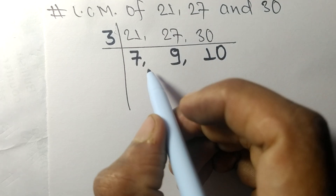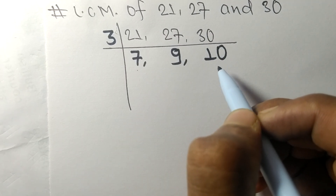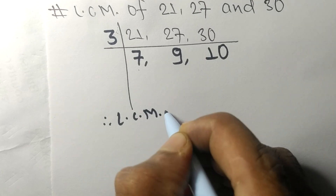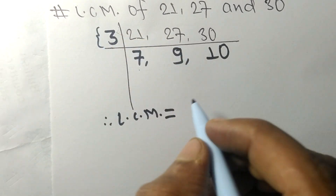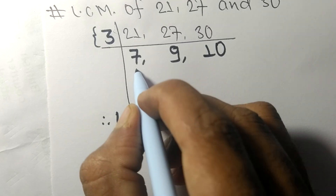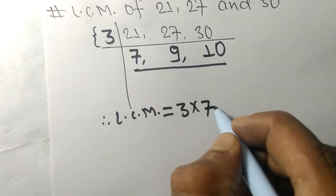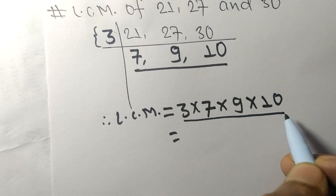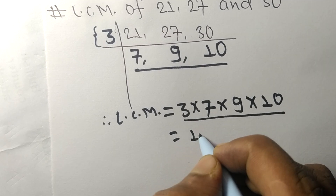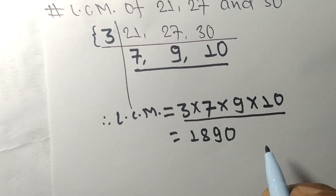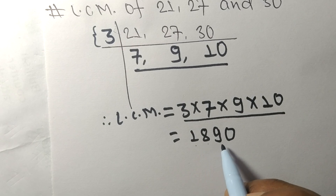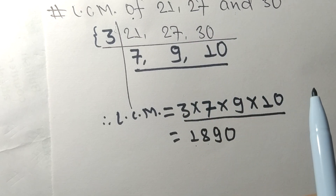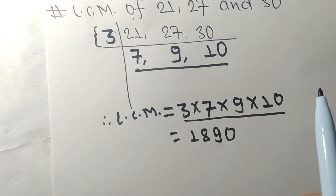Now 7, 9, and 10 are not divisible by the same number, so the LCM is calculated by multiplying 3 from this side with 7, 9, and 10. Multiplying all these numbers gives us 1890, so 1890 is the LCM of 21, 27, and 30. Thanks for watching.